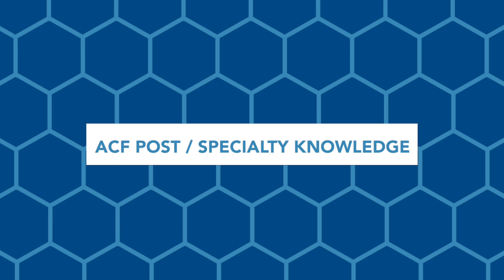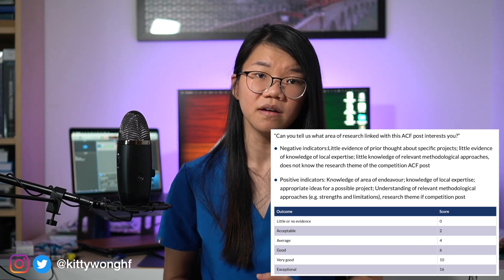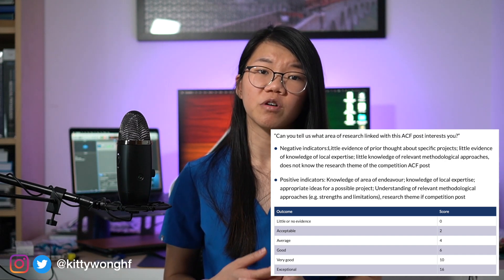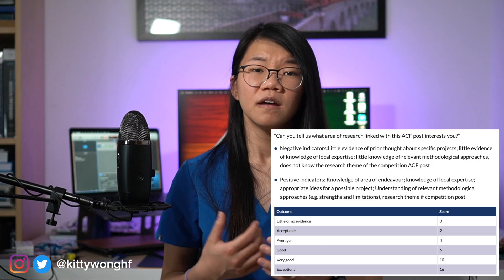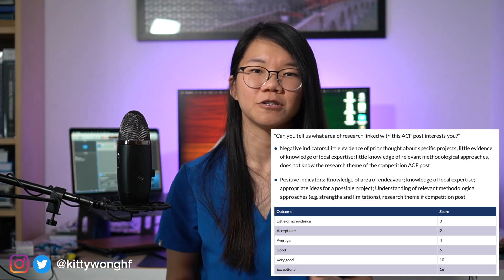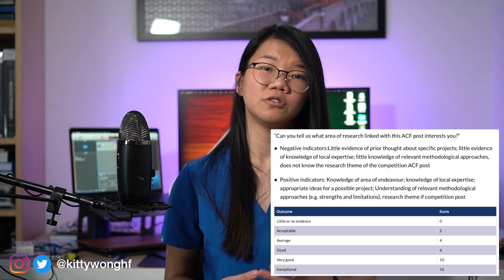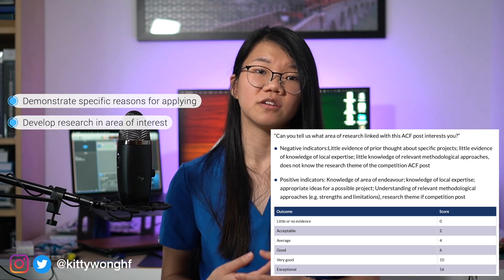You'll likely be asked about why you want the particular ACF post and what specific research interests you. This is your opportunity to show that you've done your homework and given thought to what you want to do with your three years. To score strongly, the NIHR positive indicators include knowledge of the area of endeavour, knowledge of local expertise, appropriate ideas for a possible project, understanding of relevant methodology, and understanding of the research theme. The interviewers are not looking for a completed project plan — they want to see that you have good academic reasons to apply and are keen to develop further research in your area of interest.